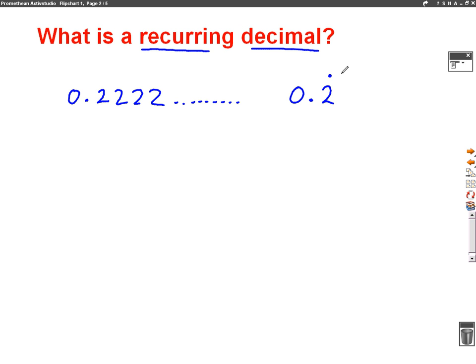Another example of a recurring decimal would be something like 0.353535, and that keeps going forever in that pattern. So the way we could write that in a bit of a shorter way is 0.35, and it's got a dot above both the 3 and 5 to show that that pattern keeps going.